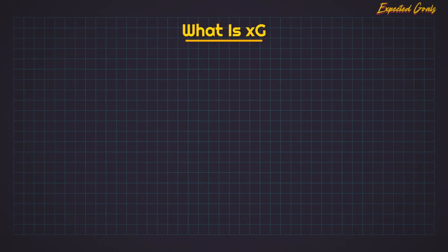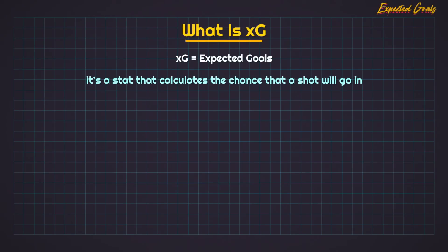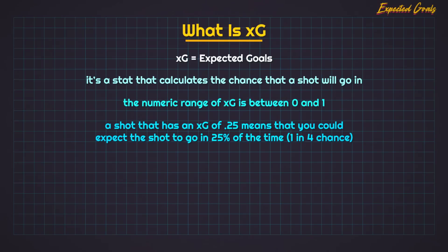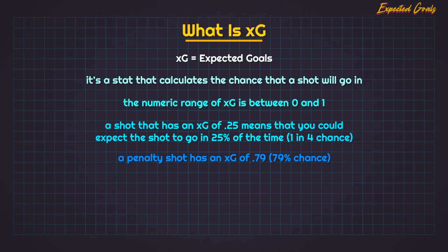In Football Analytics and in Football Manager, you may have heard of a stat called XG. XG stands for Expected Goals. It's a stat that calculates the chance that a shot will go in. The numeric range for XG is between 0 and 1. A shot that has an XG of 0.25 means that you could expect the shot to go in 25% of the time, or a 1 in 4 chance. A penalty shot has an XG of 0.79 — a 79% chance that it results in a goal.